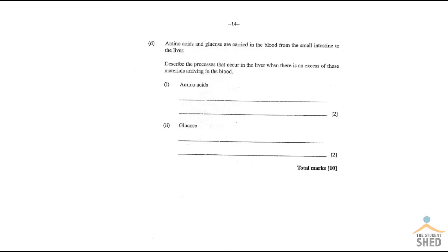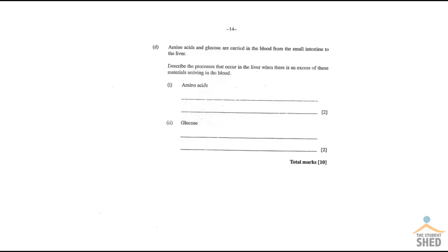The last part of the question asks you here: amino acids and glucose are carried into the bloodstream from the small intestine to the liver. Describe the processes which occur in the liver when there is an excess of these materials in the blood. So what happens to any excess amino acids? Now, of course, any excess amino acids, the body can't store them.